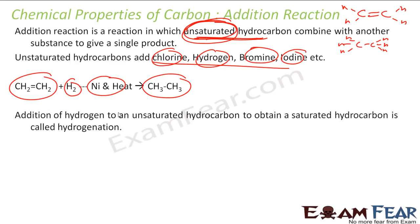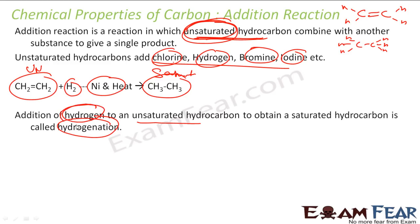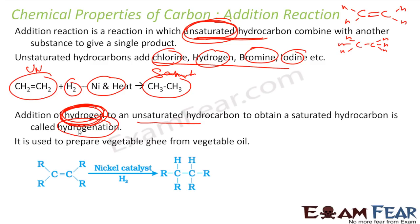Addition of hydrogen to an unsaturated hydrocarbon to obtain a saturated hydrocarbon is called hydrogenation. You can add hydrogen, chlorine, bromine — anything — but if you specifically add hydrogen to convert from unsaturated to saturated, this process is called hydrogenation.